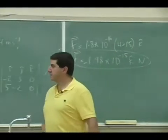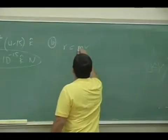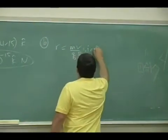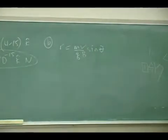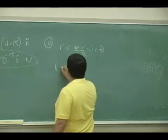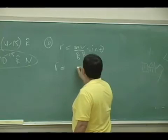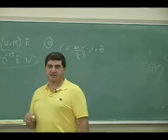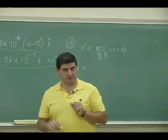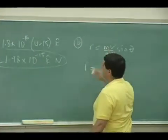Part B, what is the radius of the orbit? Last time we derived the equation for that. R equals mv over qb, sine of theta. So, in other words, v sine of theta is only the perpendicular component of the v. The parallel component is not affected at all.